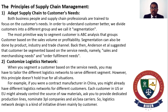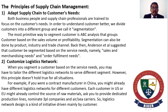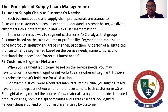The second principle is the customized logistics network. When you segment customers based on service needs, you may have to design different logistics networks to service different segments. However, this principle does not hold true for all situations. For example, if you are a contract manufacturer in China, you might already have different logistics networks for different customers. Each customer in the US or India might control the source of raw materials, ask for dedicated production lines, and nominate 3PL companies and freight carriers. The logistics network design is driven mainly by the customer — this is called the customized logistics network.